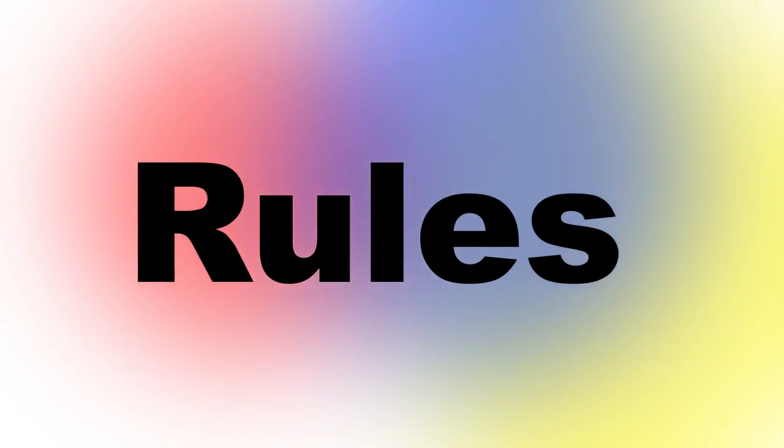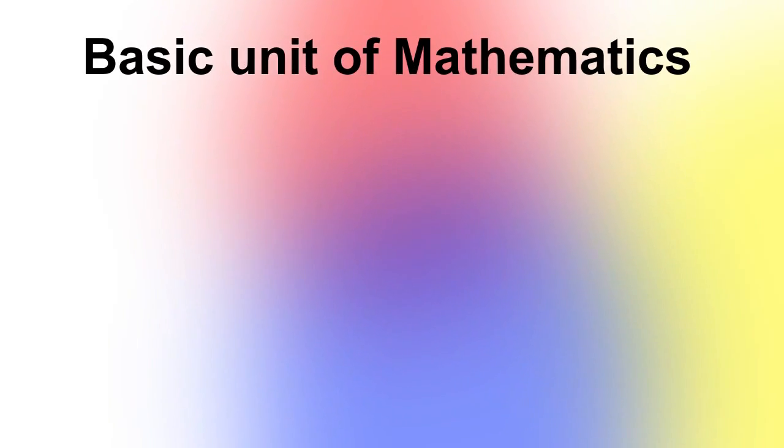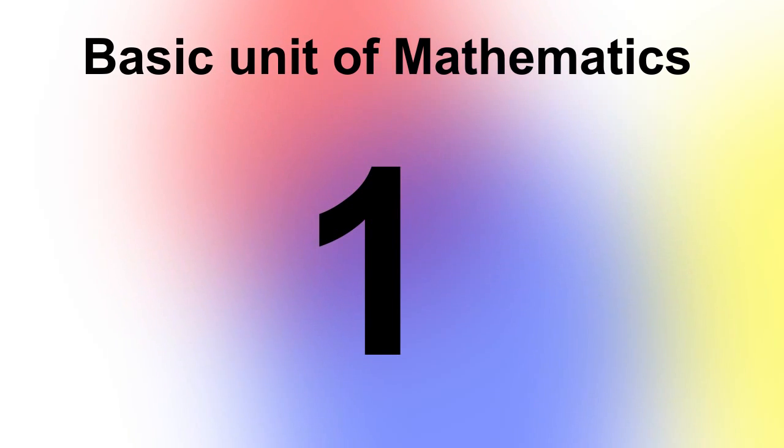Math is really a set of rules that follows from a simple set of axioms, or a statement that we regard as true, with which we can build the rest of our rules. To start off, we define our basic unit of mathematics as the number 1. Next, we define our first operation, addition.